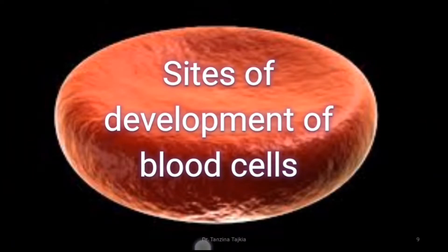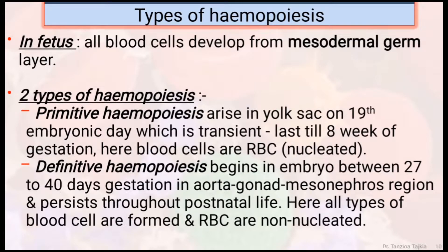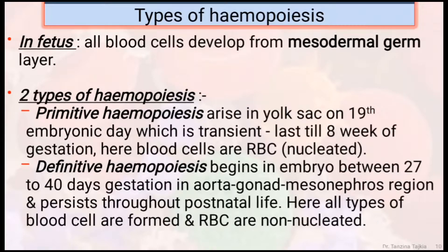The sites of development of blood cells: in the fetus, all blood cells develop from the mesodermal germ layer. There are two types of hematopoiesis — primitive and definitive. Primitive hematopoiesis arises in the yolk sac on the 19th embryonic day, which is transient and lasts till 8 weeks of gestation; here, RBCs are nucleated. Definitive hematopoiesis begins in the embryo between 27 to 40 days of gestation; here, all types of blood cells are formed and RBCs are non-nucleated.